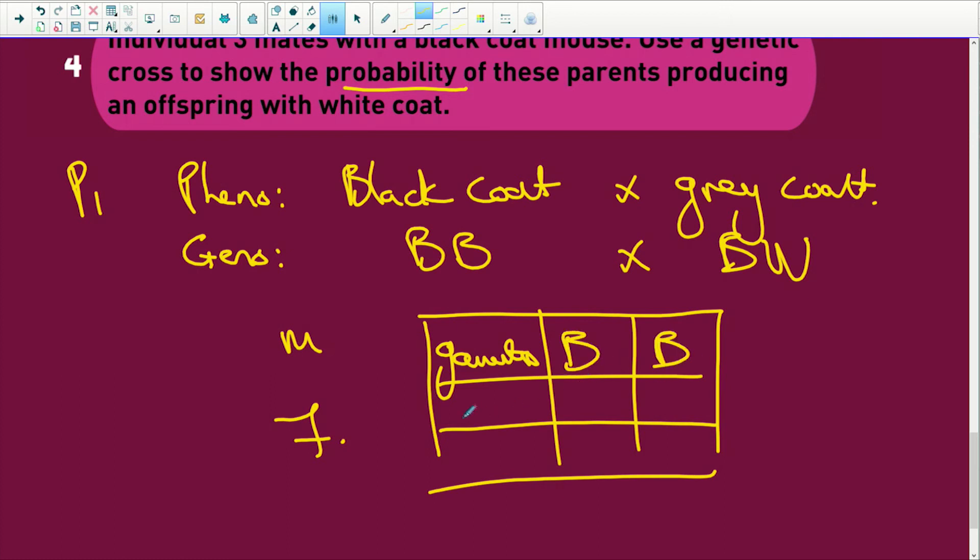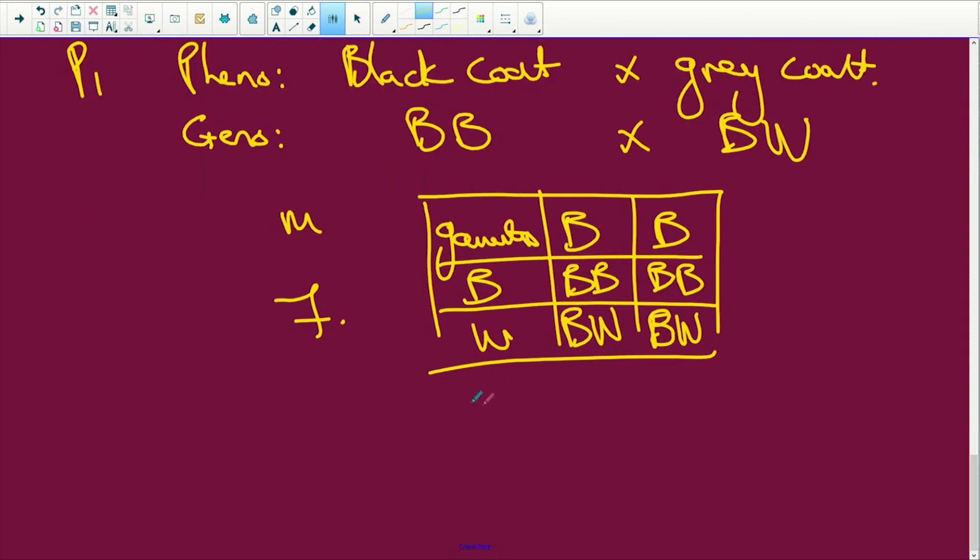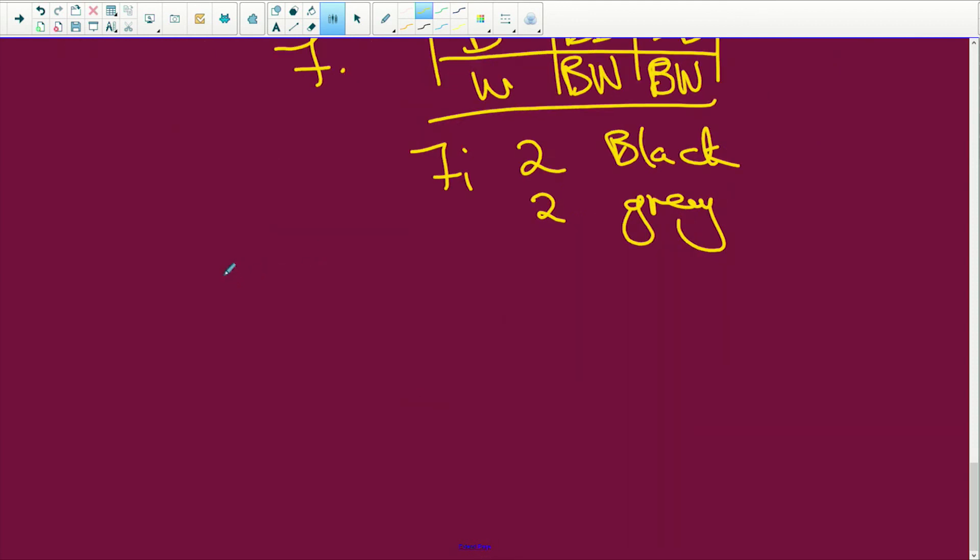So we have B, B, B, W. So those will be black. 50% will be grey. Okay. So if we look at the phenotype, which I'm not going to have time to write out now, but we're going to have two are black and we'll have two that are grey. So therefore, what is the chance of having a baby, an offspring with a white coat? There is 0% chance of offspring with a white coat. Done. Sorted.